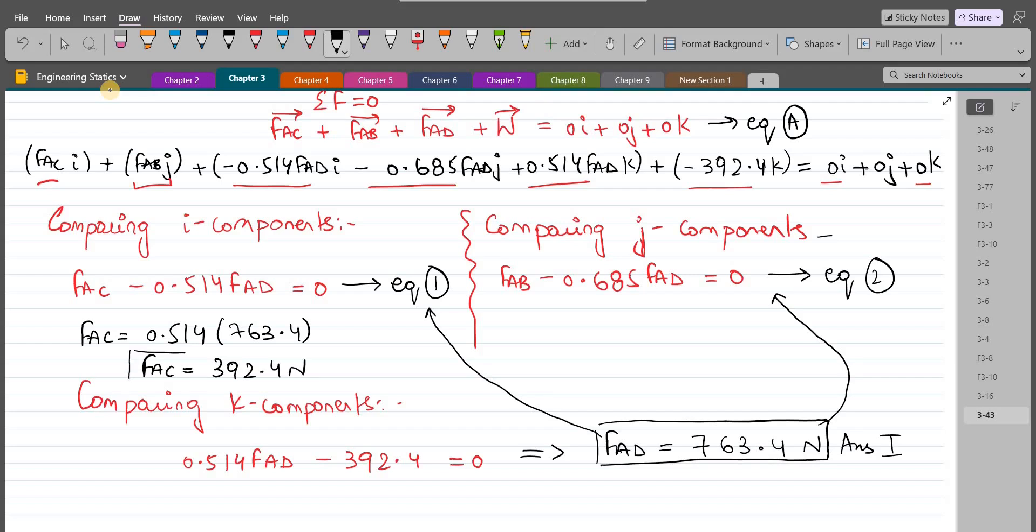And from equation 2, FAB is equal to 0.685 into FAD which is 763.4 Newtons. So upon simplification, FAB comes out to be 522.9 Newtons. So this is our third answer.